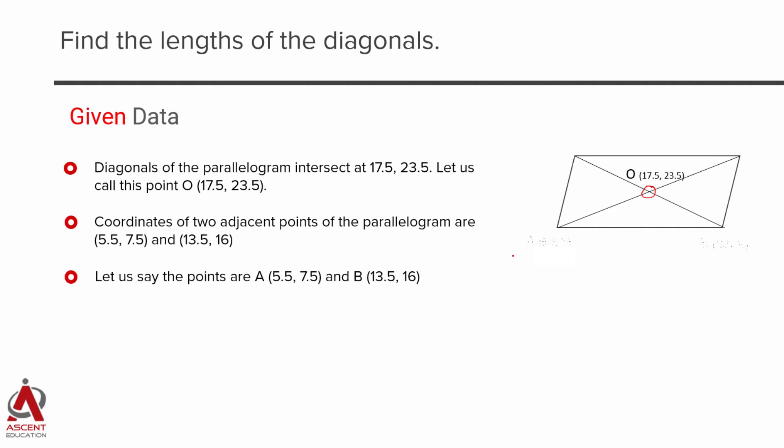The diagonals of the adjacent points are 5.5, 7.5. Let us call this point as A. This is 5.5, 7.5 and point B, its coordinates are 13.5, 16. So these two are the adjacent points.